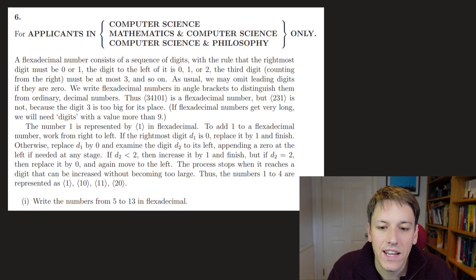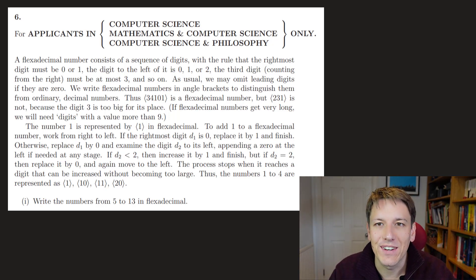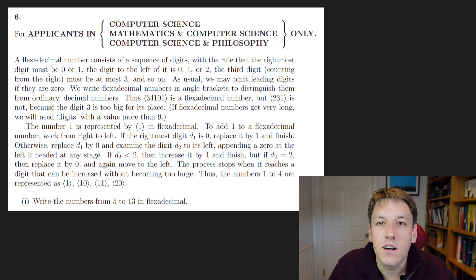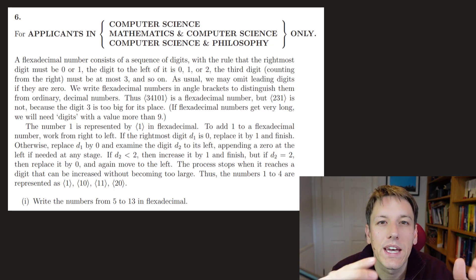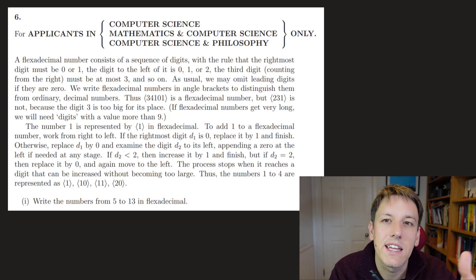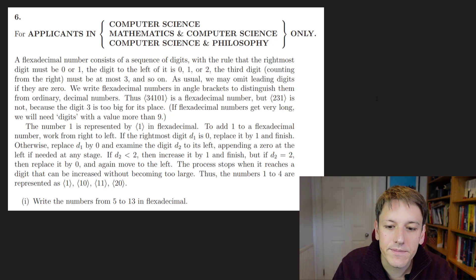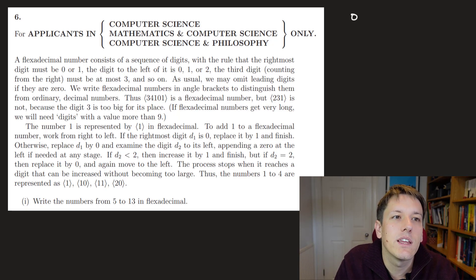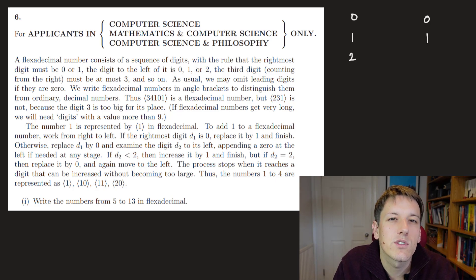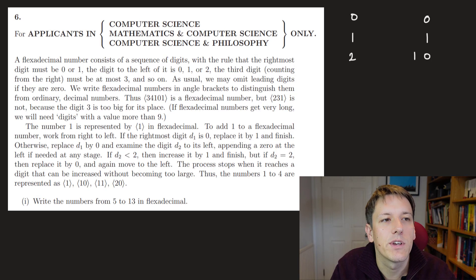This question is about flexidecimal numbers defined in the question — pause and read the whole thing if you haven't already. The idea is that they give you a place value system, a bit like ordinary decimal numbers, but rather than ticking over when we get to nine, we tick over at different values. So zero is zero, one is one, and for two — the first column ticks over like binary — we get one zero. It's helpful if you've thought about binary before, but you'll get the idea either way.